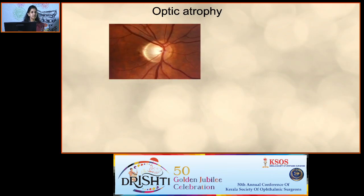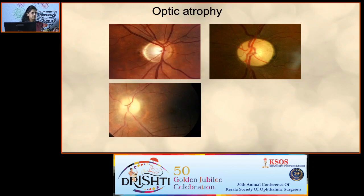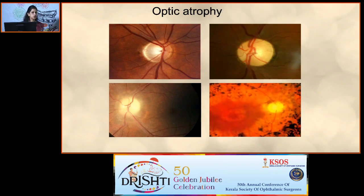First fundus case: pallor involving only the temporal aspect — this is temporal pallor, indicating partial optic atrophy. A totally pale, white disc with well-defined margins and normal-looking vessels is primary optic atrophy. Blurred margins with signs of resolving edema indicate secondary optic atrophy. Then there is consecutive optic atrophy. In optic atrophy cases, know the causes, how to differentiate between types, associated field effects, and the newer treatment aspects. Temporal pallor is most important — you must not miss it.